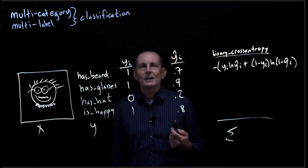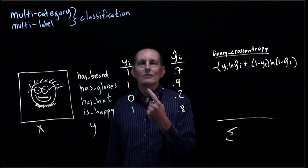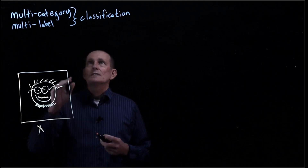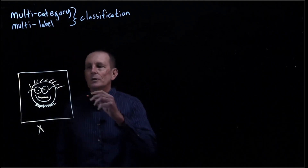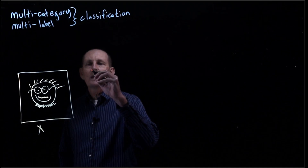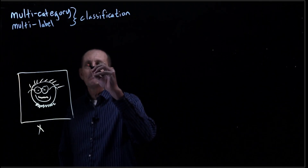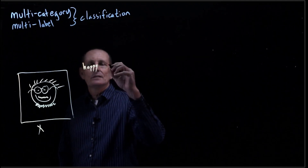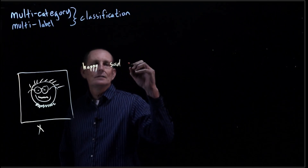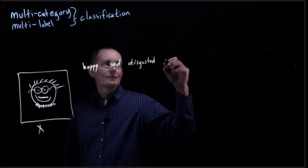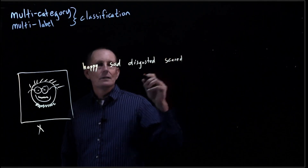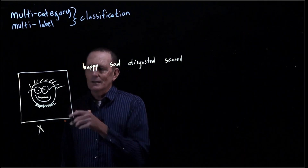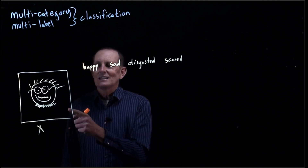Multi-category is somewhat different. In multi-category classification, you're allowed to have one of a set of categories — just one. For example, if the categories are emotions, they might be happy, sad, disgusted, or scared. The incoming y is going to be one of these values. In this case, the person looks happy, so y would be happy.